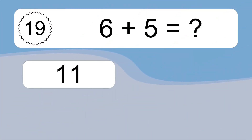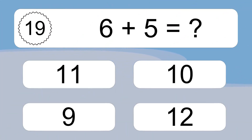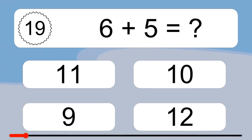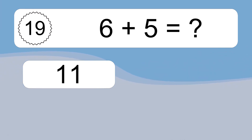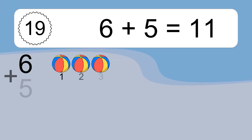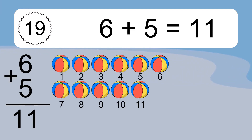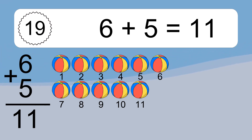6 plus 5 equals what? 6 plus 5 equals 11. Let's count it. 1, 2, 3, 4, 5, 6, 7, 8, 9, 10, 11.